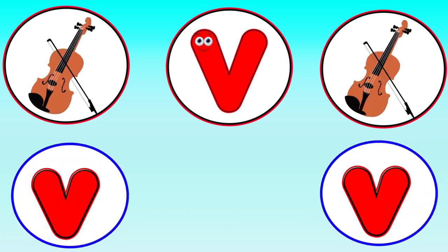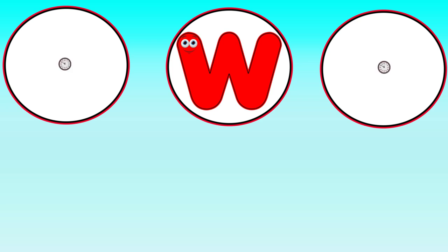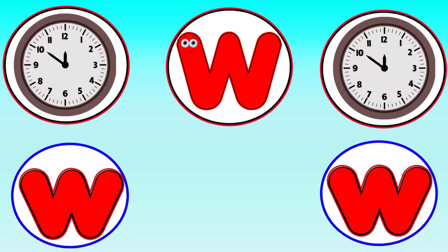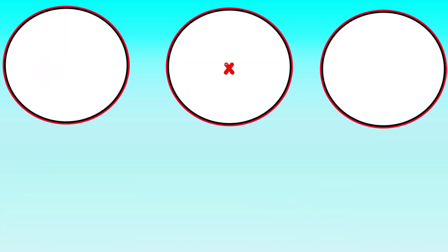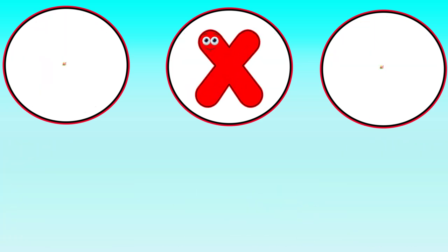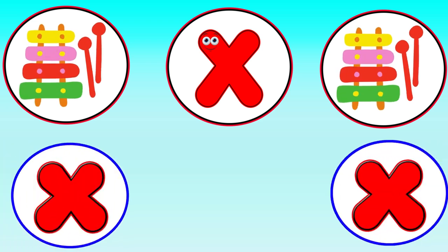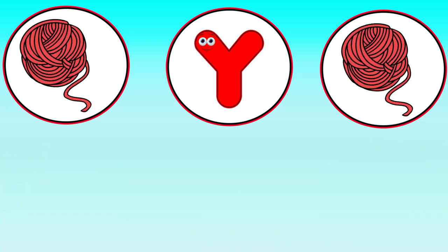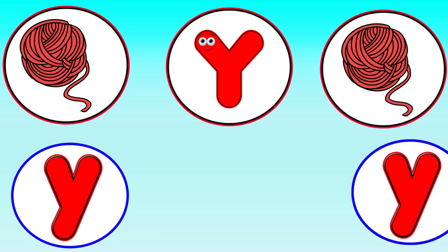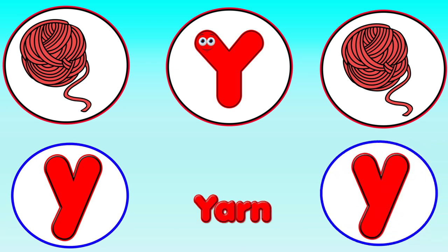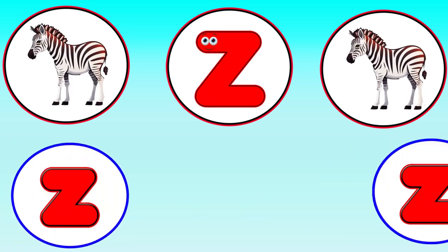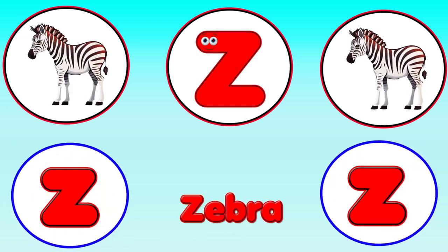V is for Violin. V, V, Violin. W is for Violin. V, Violin. X is for Xylophone. Z, Z, Xylophone. Y is for Yak. Ya, Ya, Ya. Z is for Zebra. Z, Z, Zebra.